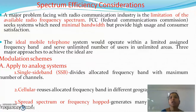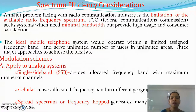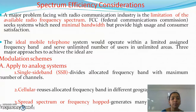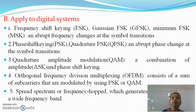Because of the cellular concept, we can reuse the allocated frequency band in different geographic locations, which automatically increases the capacity of the cellular system and the efficiency of the spectrum. Spread spectrum or frequency hopping generates many codes for a wide frequency band, which is also helpful in increasing the capacity of the cellular system. These three are the main approaches helpful for increasing spectrum efficiency in analog systems.